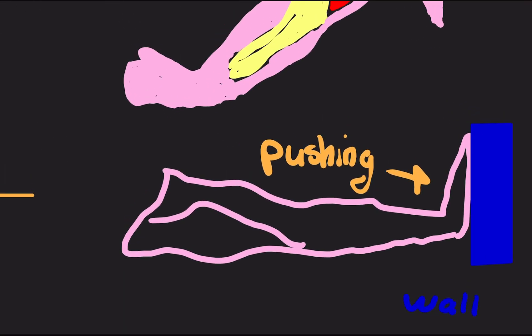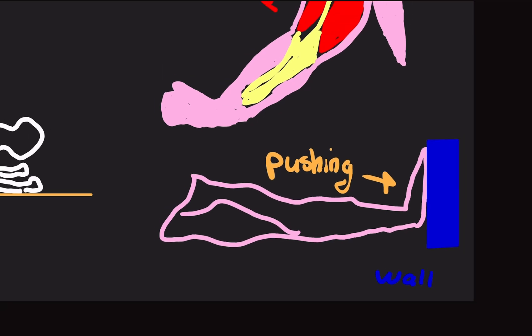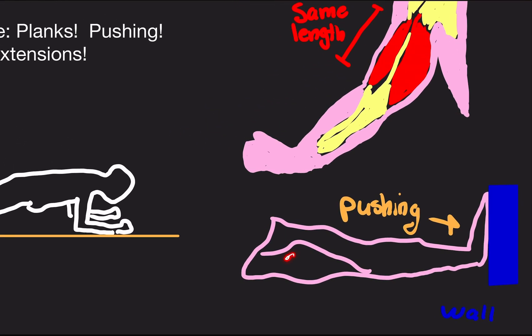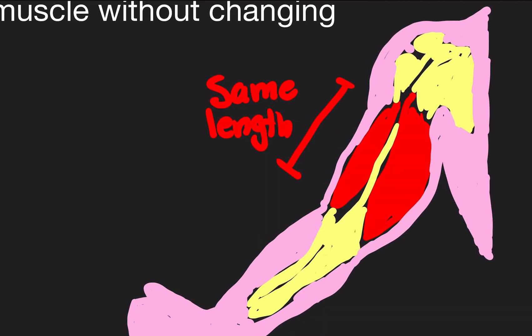Another example is pushing against something — say you have a concrete wall and you're pushing against it. You are exerting force, so you are using your muscles, but they're not shortening in length. Your triceps, deltoids, or whatever muscle you're using to push — they're not shortening. Here I drew a diagram showing something like a tricep extension, basically staying the same length throughout the entire movement.